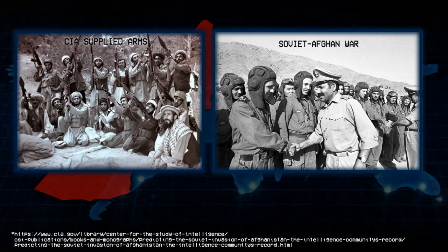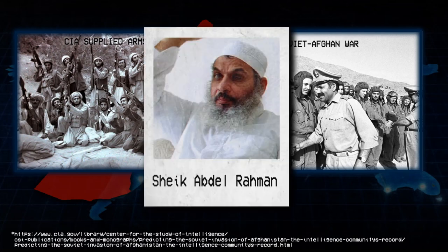One of these armed extremists is Sheikh Abdel Rahman, who will become involved in the World Trade Center bombing in New York.